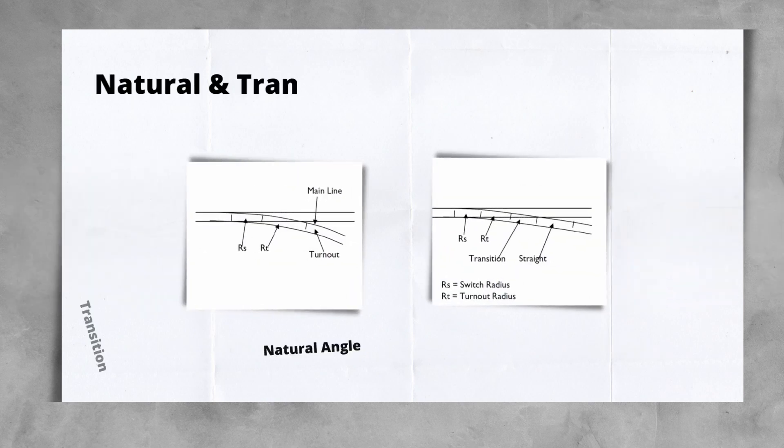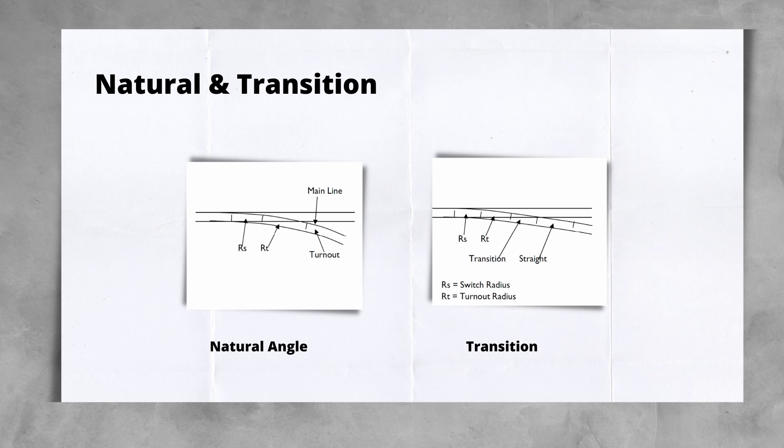Turnout layouts can also be described as natural angled or transitioned. In a natural angled turnout, the overall radii continues through the crossing. In a transitioned turnout, the curved geometry changes after the turnout radius, with the addition of a transition, and the crossing angle is not linked to the turnout radius directly.